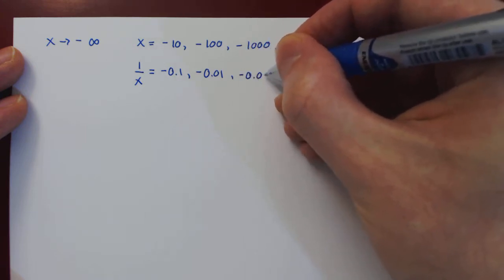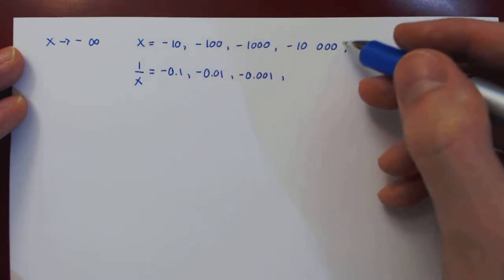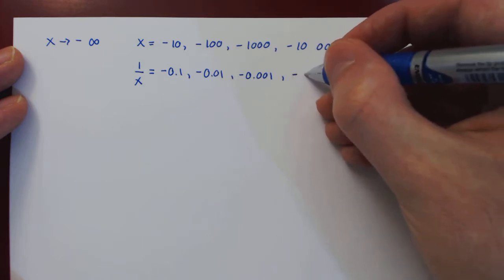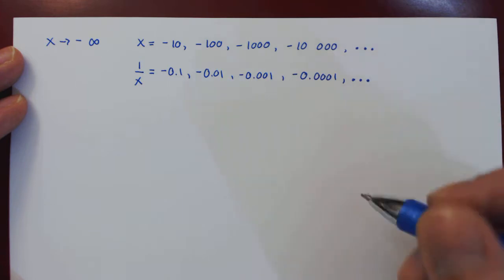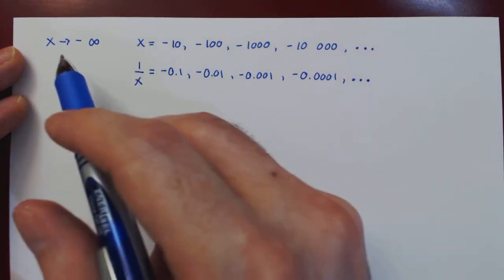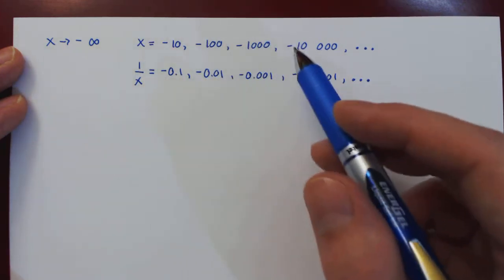1 over negative 1,000, negative 0.001. 1 over negative 10,000, negative 0.0001, and so on.